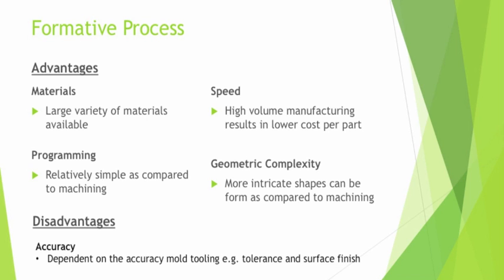For the advantages and disadvantages of the formative process: in terms of materials, there are a large variety available, mainly metallic and polymer materials. It is also worth noting that the formative process, such as metallic casting, has been around for a very long time. For programming, it is relatively simpler compared to machining because there are fewer tool changes — you compress the material, eject the final object, and repeat. For speed, the formative process can be a relatively quick, high-volume manufacturing process resulting in a very low cost per part, mainly in injection molding. In terms of geometric complexity, more intricate shapes can be formed by the casting process compared to machining.